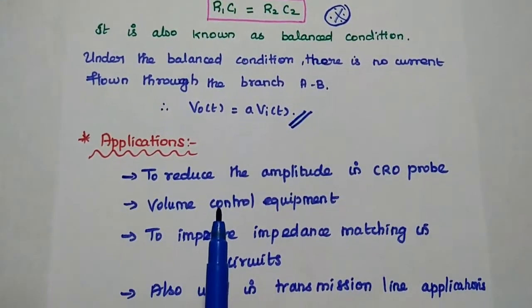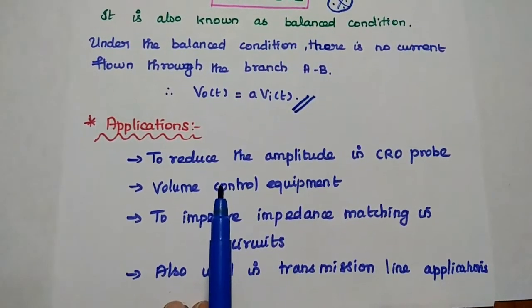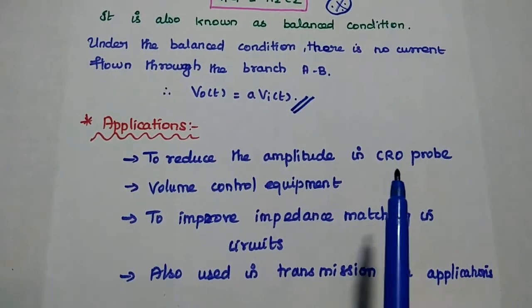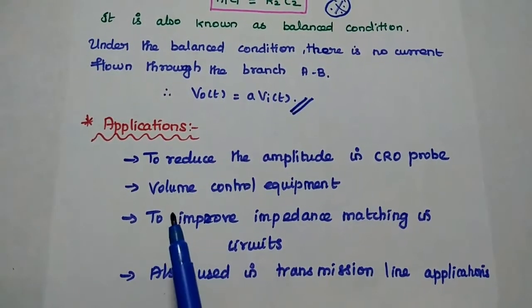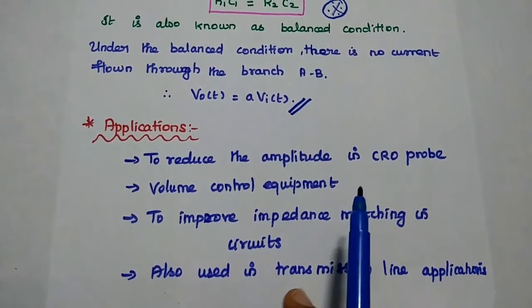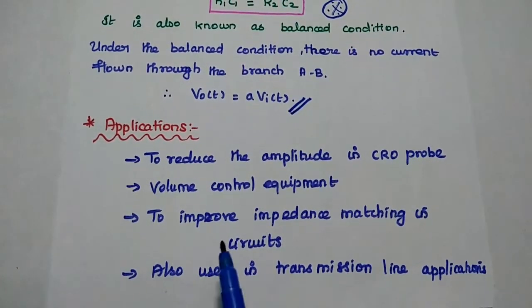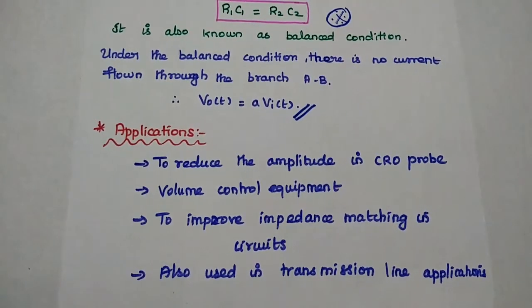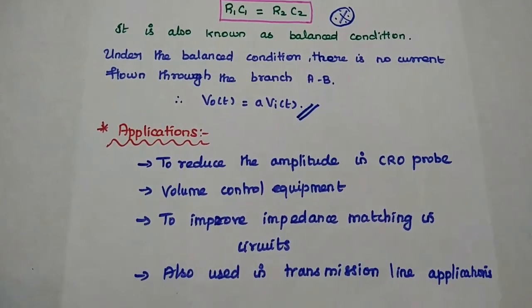Applications of attenuators: Attenuators are mainly used to reduce the amplitude of the signal in CRO probe. It is mainly used as volume control equipment in broadcasting technique. It is used to improve the impedance matching in circuits as well as in transmission line applications.